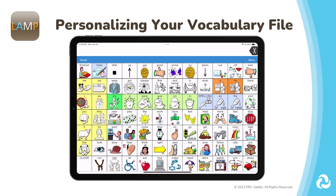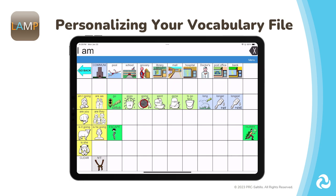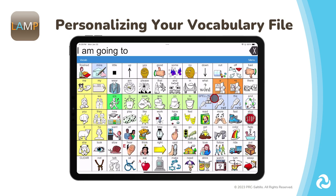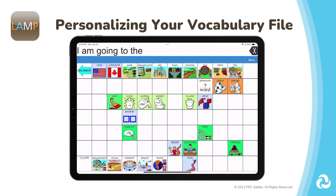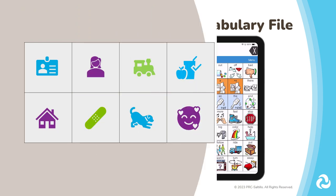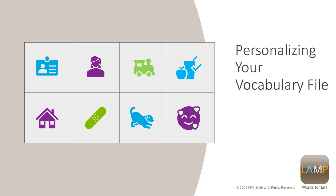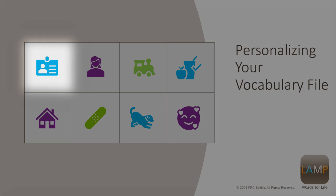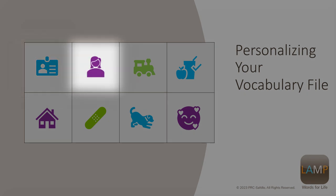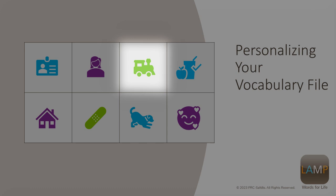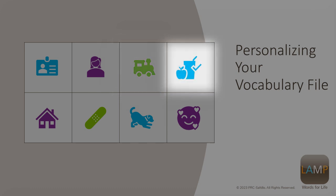Next, you will want to explore the vocabulary file and find where some of your AAC learner's favorite words are. All of the vocabulary files come with lots of pre-programmed words, but there will be places to add in personalized vocabulary. Work with your team on determining what words are needed and where they should be programmed. Use the Making It Personal Planner to brainstorm some words you may want to add — things like their personal information, people in their life, things they enjoy doing or playing with, favorite foods and drinks.